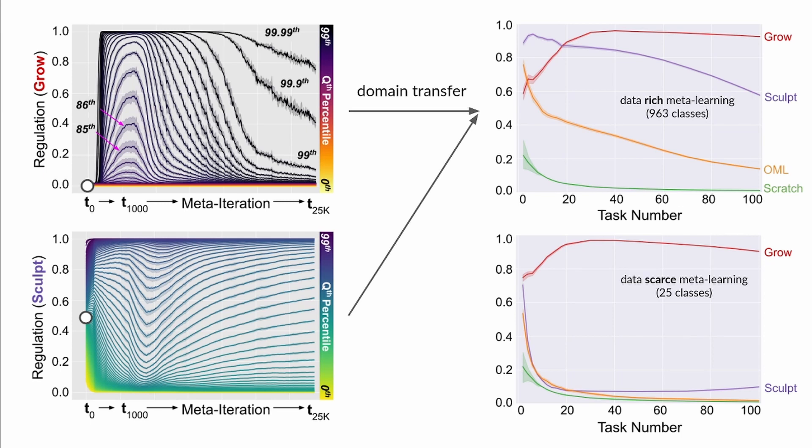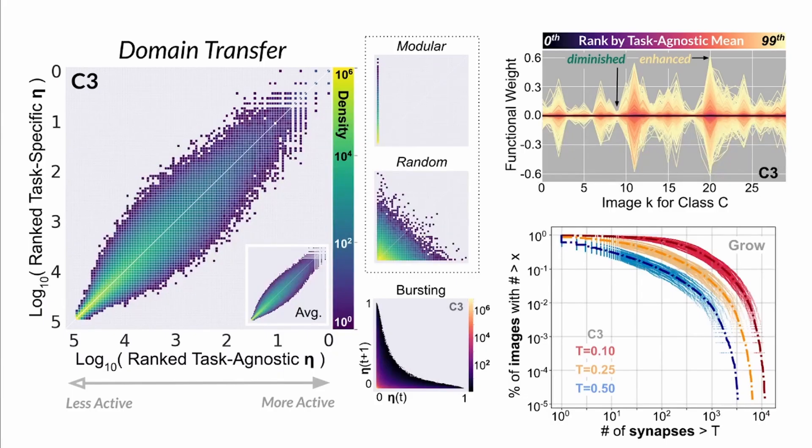How then does the GROW model avoid catastrophic forgetting? Contrary to prior methods, our model does not learn to modularize the classifier or use disjoint sets of weights for different inputs. Rather, we find that the regulator reuses the same weights across tasks under domain transfer.